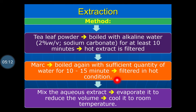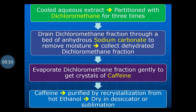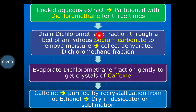Both aqueous extracts are mixed together and evaporated to reduce the volume. The extract is then cooled to room temperature. This cooled aqueous extract is transferred to a separating funnel and partitioned with dichloromethane three times, so the caffeine present in the aqueous extract gets transferred to the dichloromethane solvent. The dichloromethane fraction is then drained through a bed of anhydrous sodium sulfate to remove traces of moisture.